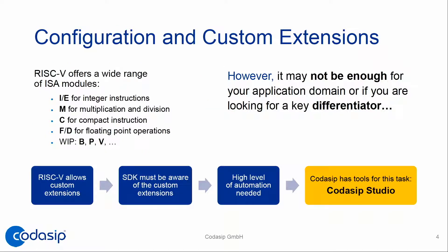In the Kodasip world, configuration means you can select from ISA modules such as I, E, M, C, and also from microarchitecture options like caches, branch prediction, and other microarchitecture things not necessarily ISA-related. Beyond configuration, we allow customization — adding your secret sauce, your innovation, your differentiation. We give you a tool by which you can do really amazing stuff without having to ask us.